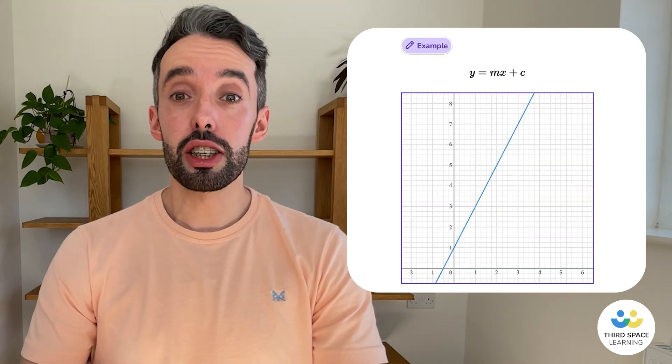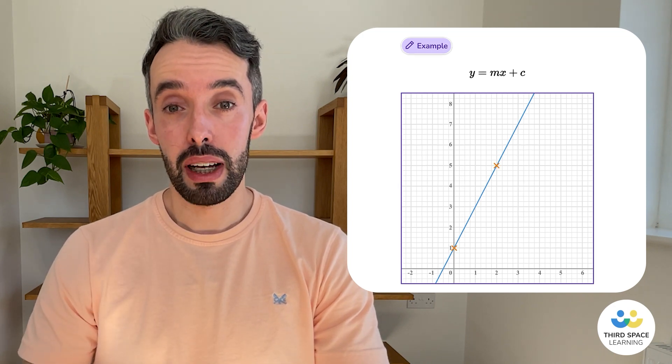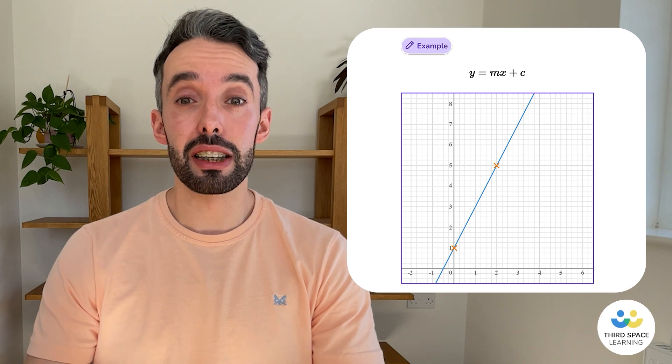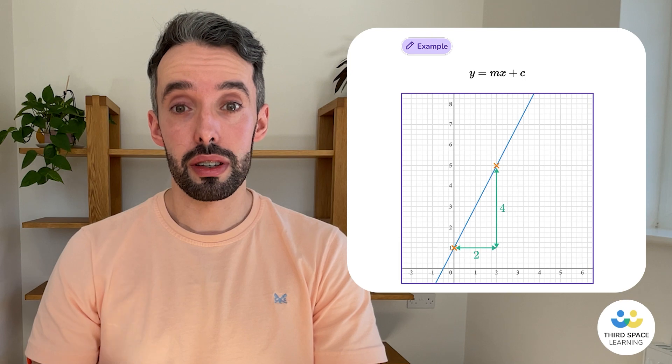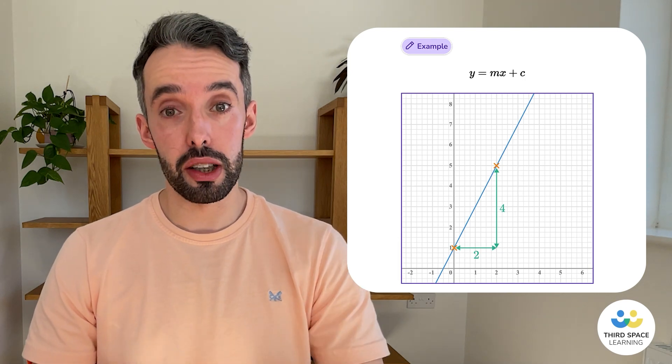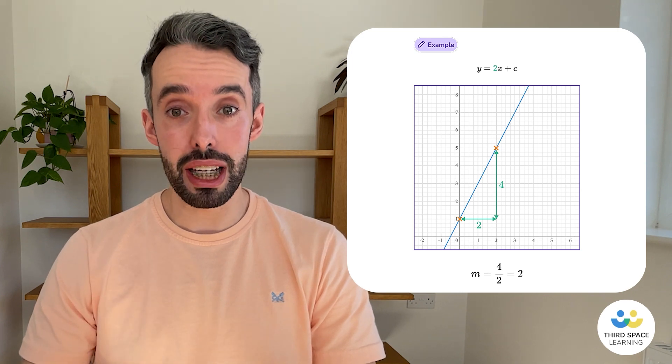So, for example, this straight line has the general form y equals mx plus c. Let's work out the gradient by selecting two points on the graph, then working out the difference in the y values, working out the difference in the x values, and dividing them. So here, m, the gradient, is 2.